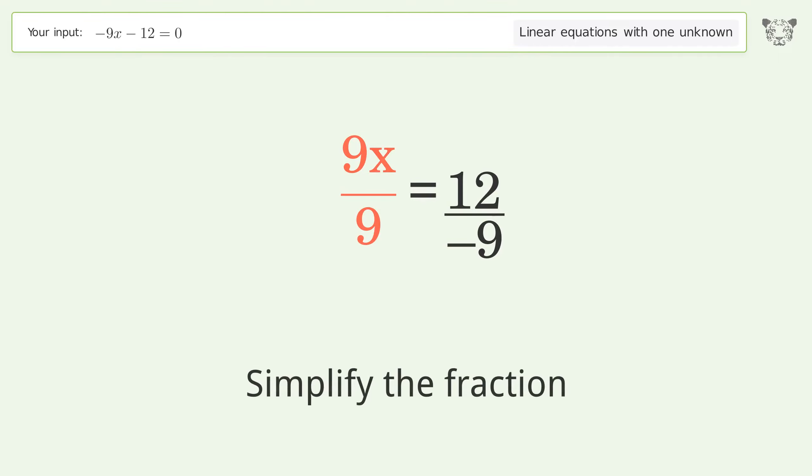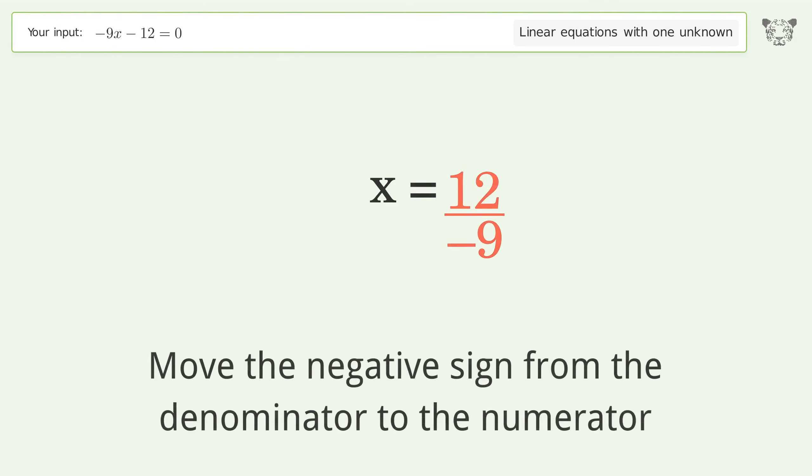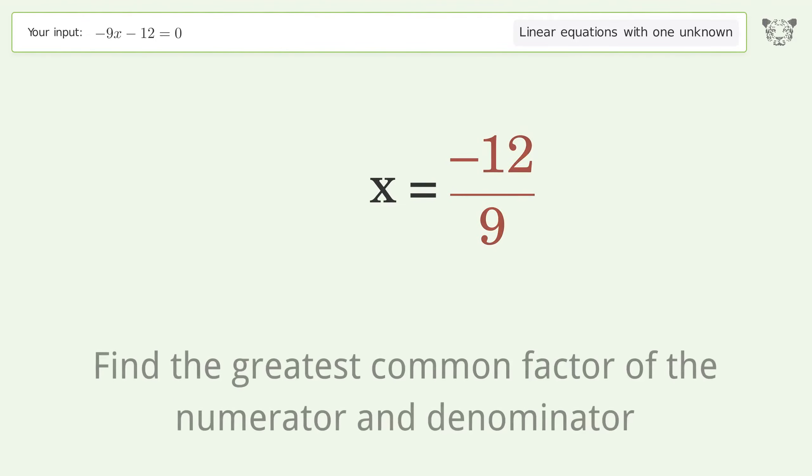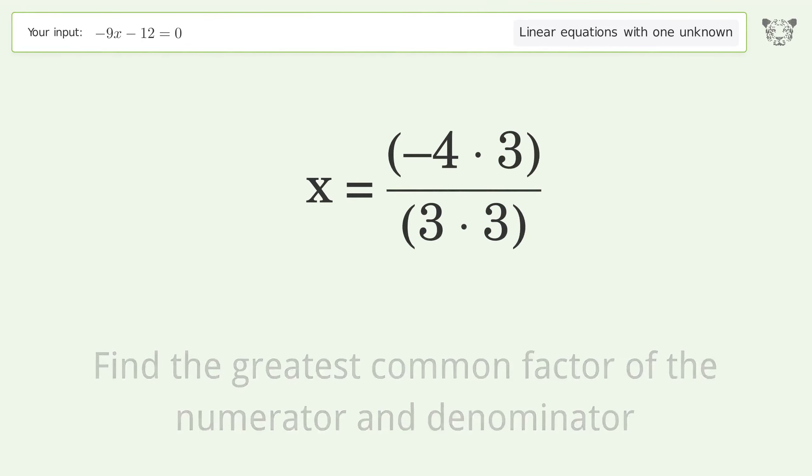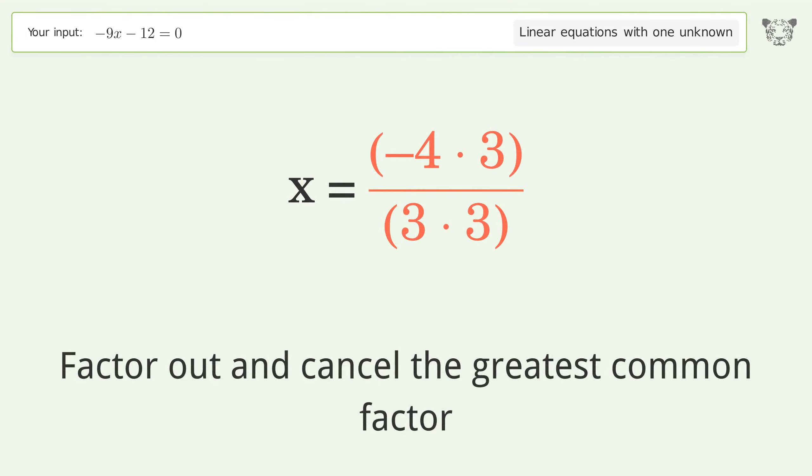Simplify the fraction. Move the negative sign from the denominator to the numerator. Find the greatest common factor of the numerator and denominator. Factor out and cancel the greatest common factor.